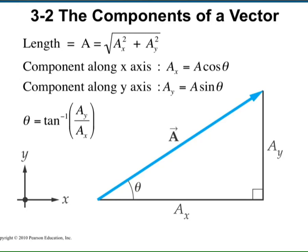There are two ways to represent a vector. One is to specify its components. The other is to give its magnitude or length and the angle of the vector with the x-axis.